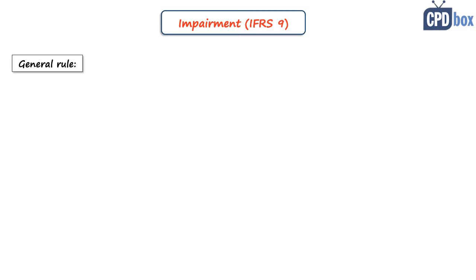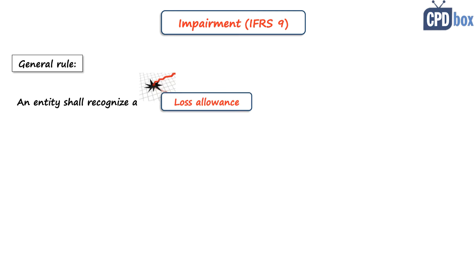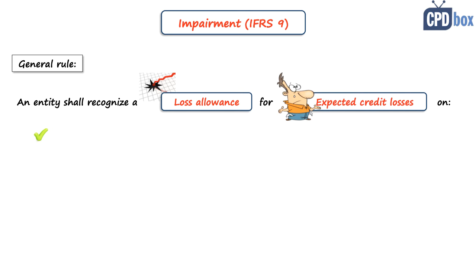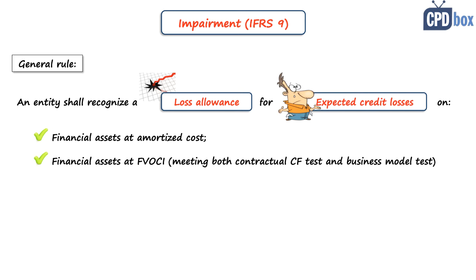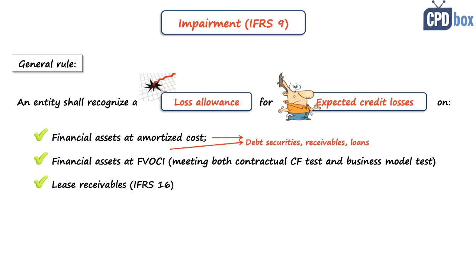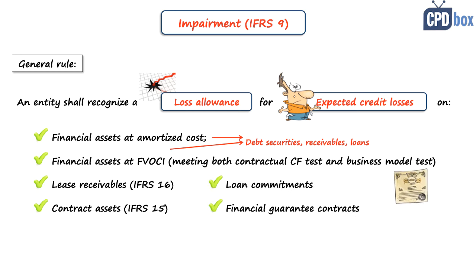Now let's look at impairment of financial assets — the new concept introduced in 2014. The general rule is that an entity shall recognize a loss allowance for expected credit losses on financial assets at amortized cost, financial assets at fair value through other comprehensive income that meet the contractual cash flows test, debt securities, receivables, loans, lease receivables under IFRS 16, contract assets under IFRS 15, loan commitments, and financial guarantee contracts. Shares, equity instruments, derivatives, and similar types are not subject to impairment loss under IFRS 9, because these assets are measured at fair value and any potential impairment is part of the fair value remeasurement.